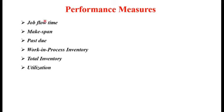The second Performance Measure is Make Span — the Total Time Required to Complete a Group of Jobs. The third is Past Due — the Amount of Time by which a Job Missed its Due Date. We must supply products to customers within the Due Date; if any component misses its Due Date, the amount of time by which it is missed is called Past Due.